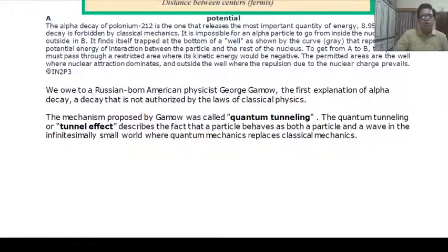We owe to a Russian-born American physicist George Gamow the first explanation of alpha decay, a decay that is not authorized by the laws of classical physics. The mechanism proposed by Gamow was called quantum tunneling. The quantum tunneling or tunnel effect describes the fact that a particle behaves as both a particle and a wave in the infinitesimally small world where quantum mechanics replaces classical mechanics.